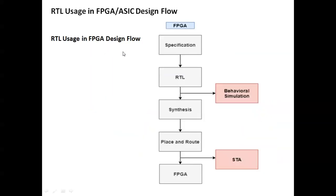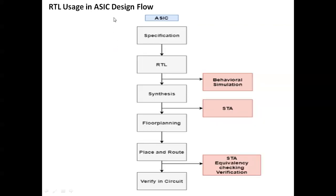The FPGA RTL design flow starts with specification, followed by writing the RTL code. Then behavioral simulation is performed using simulation tools. After that, synthesis is done, and finally place and route is performed at the fabrication site on the FPGA.